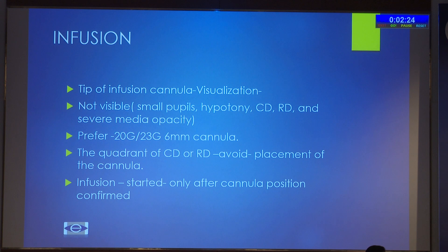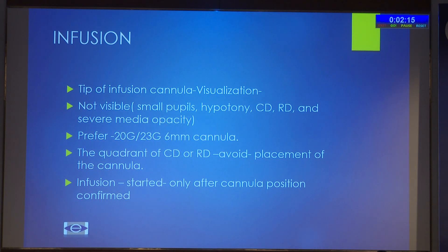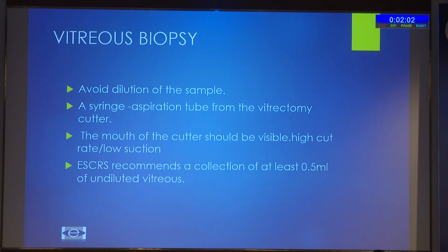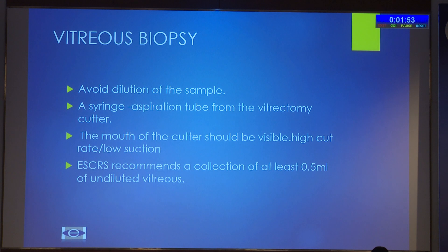To start the procedure, the most important first step is infusion. Since endophthalmitis patients mostly have very poor media clarity, you must ensure the infusion is within the vitreous cavity. If the media is very dense, we can use a 20-gauge or 23-gauge 6mm cannula. If there is a preoperative quadrant of choroidal detachment or retinal detachment, it should be avoided, and infusion placed in another quadrant.